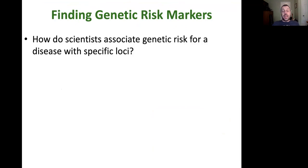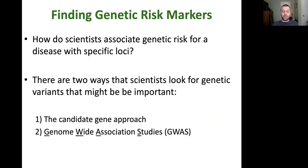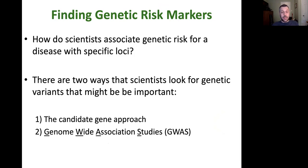When we want to find risk markers — mutations in your DNA that can give you an idea of how much at risk you are for any given disease — how do we find those? There are basically two ways scientists look for genetic variants that might be important in your risk for any given disease: one is the candidate gene approach, and two is something called genome-wide association studies. I'll go through each one and explain what's good and bad about each approach.